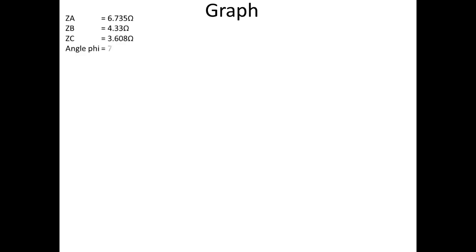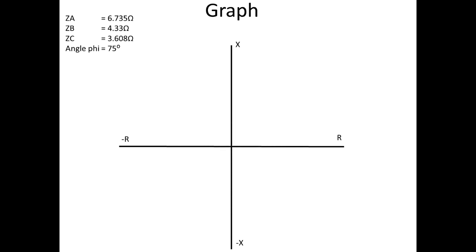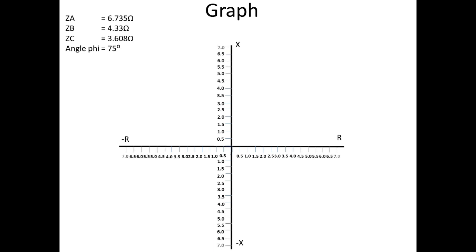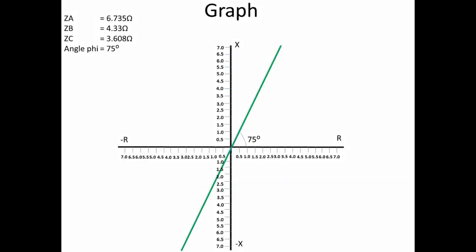Now we will see how to draw the actual graph for the values we calculated. For the x-axis take R value; for the y-axis take X (reactance) value. This can be drawn using graph software or on paper. For these two axes, take an equal scale. After making this scale, draw one reference line. Taking R as the reference axis, make a line at the relay's phi angle setting.